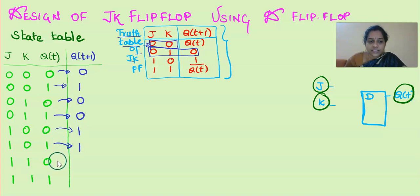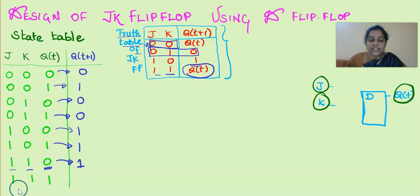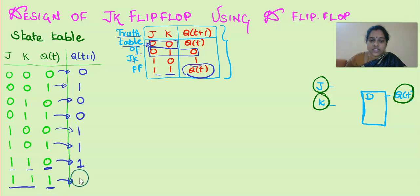For the next case, the inputs are 1, 1. So if the inputs are J, K equal to 1, 1 in the JK flip-flop, the next state will be Q bar. When Q state is 0, Q bar gives us 1. In the last combination, the inputs of J, K are 1, 1 and the present state is 1. According to the JK truth table, the next state will be Q bar, that is 0.